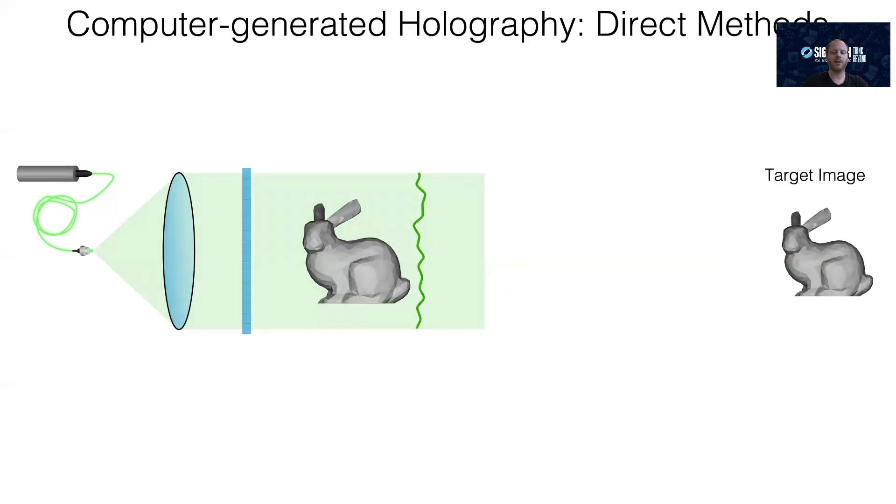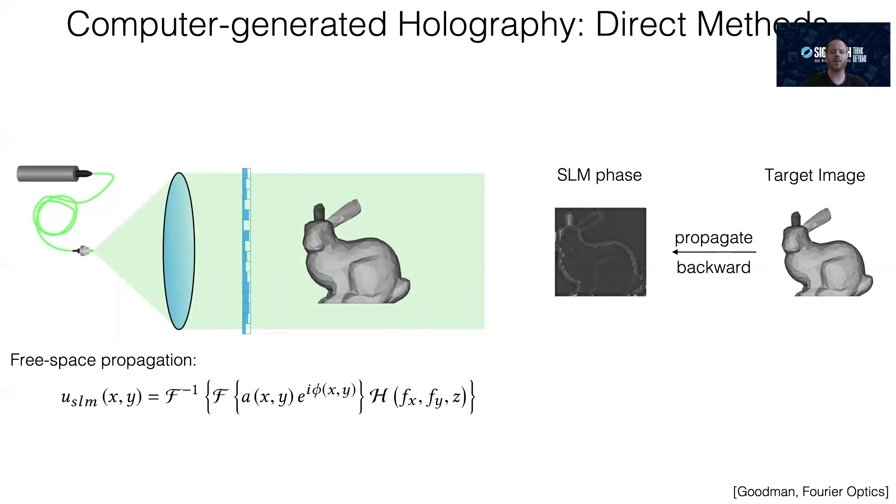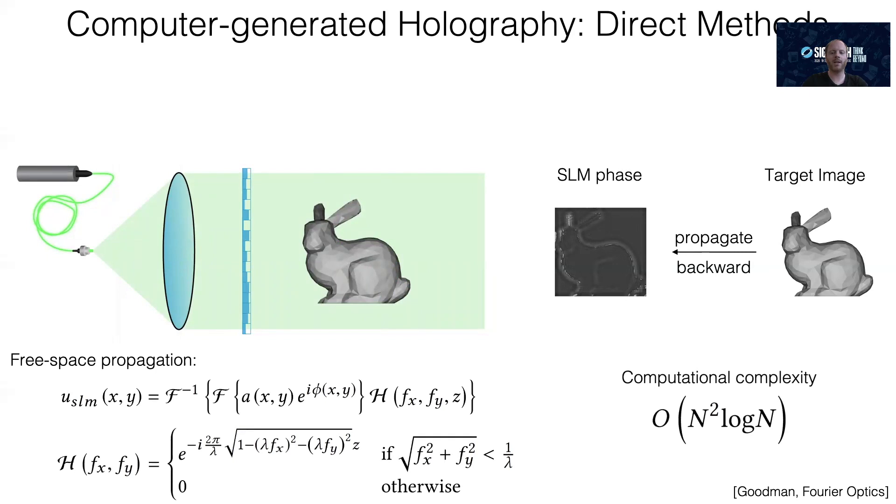To compute the phase pattern that we need to show in the SLM for a target intensity image, we use computer-generated holography, or CGH. There are two types of CGH algorithms: direct and iterative ones. A direct approach takes the target intensity and propagates the corresponding wave field to the SLM plane. Due to the fact that most available SLMs can only modulate the phase of the incident light, but not its intensity, we need to convert the propagated, complex-valued field into a phase-only representation. Now, free space propagation is a well-studied topic. For a target intensity that is parallel to the SLM, one simply takes the Fourier transform, applies a transfer function, and then applies the inverse Fourier transform. Several different types of transfer functions exist, each making different approximations. Here we show the angular spectrum method as an example. For this 2D image example, we can compute this propagation in O(n² log n), which is usually very fast, and n here is the number of pixels in the target image.